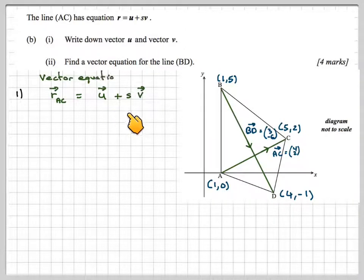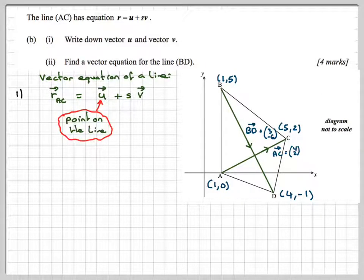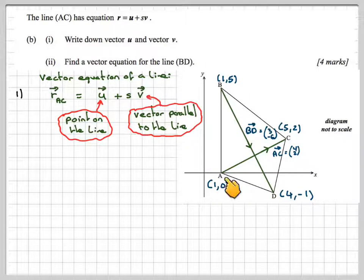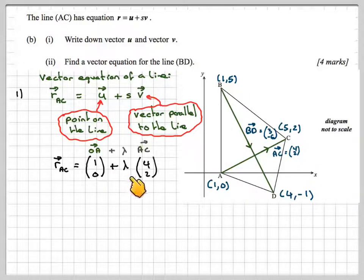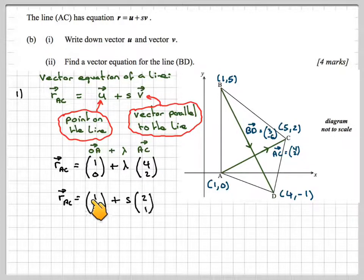RAC is going to be U + SV. This is called the vector equation of the line. The U stands for a point on the line. It could be that point or that point. It doesn't matter which one. And V is a vector parallel to the line. So let's start with this R. You must make sure you write in the R is (1,0), because that's a point on the line, OA, plus lambda times this vector here, which we just worked out to be (4,2). However, (4,2) can be simplified down to (2,1). And it's probably better to write it like this. RAC = (1,0) + S(2,1).